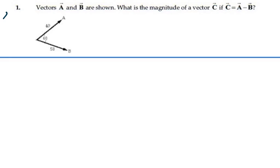Here's problem 3.1. Vectors A and B are shown. What is the magnitude of vector C if C is equal to A minus B?